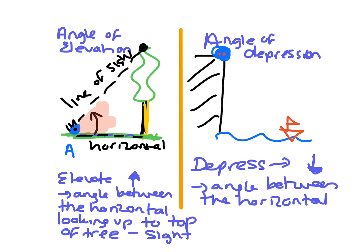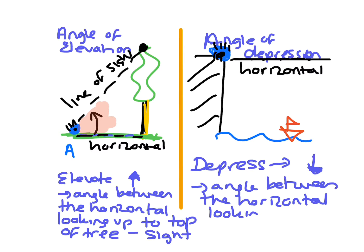I'm going to mark that with a blue dot so I can put my eyeball in — there's the pupil and eyelashes. If we're looking straight out, that's your horizontal. So we're looking straight out to the horizontal, and then what you do is you look down to the object.